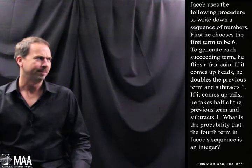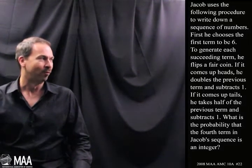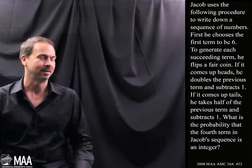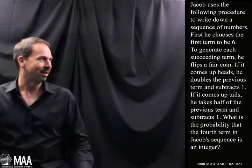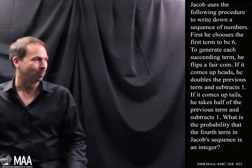I'm kind of lost right now, but I'll keep reading. What is the probability that the fourth term in Jacob's sequence is an integer? What's going on here? I read that, I know I read it, but I said the words, but I didn't quite get it in my head.